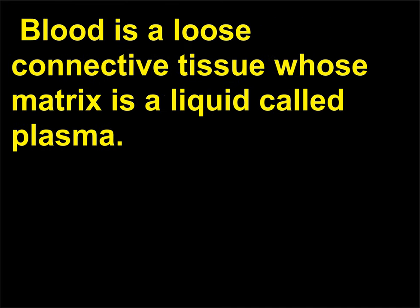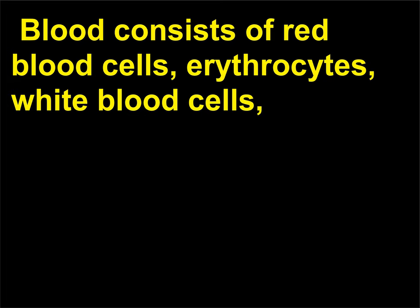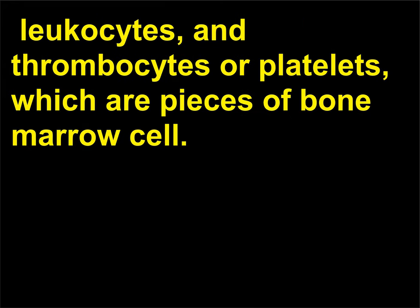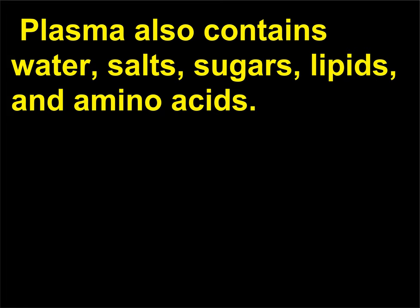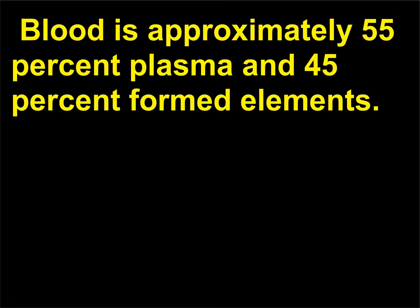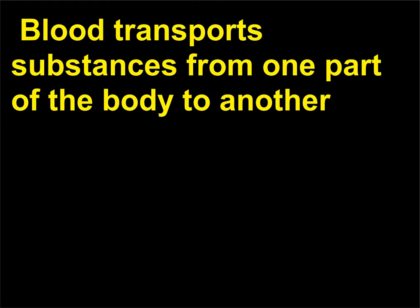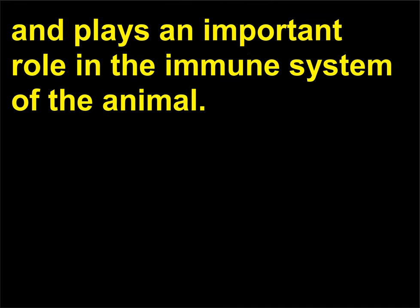Blood is a loose connective tissue whose matrix is a liquid called plasma. Blood consists of red blood cells (erythrocytes), white blood cells (leukocytes), and thrombocytes or platelets, which are pieces of bone marrow cell. Plasma also contains water, salts, sugars, lipids, and amino acids. Blood is approximately 55% plasma and 45% formed elements. Blood transports substances from one part of the body to another and plays an important role in the immune system of the animal.